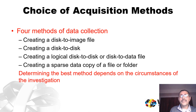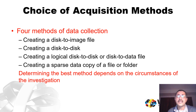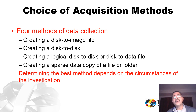There are four distinct methods of data collection. Each method has its own advantages and disadvantages, and its use is dependent upon the specific forensic circumstance. The first is creating a disk-to-image file. The second is creating a disk-to-disk file. The third and fourth are creating a logical disk-to-disk or disk-to-data file, or a sparse data copy of a file or folder. We will cover these in three segments: disk-to-image files, disk-to-disk files, and creating a logical or sparse data file.